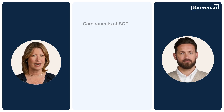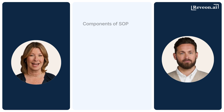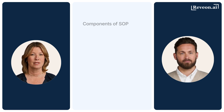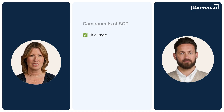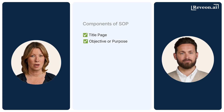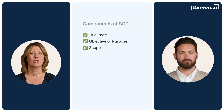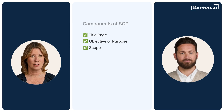Here are the essential components every SOP should include: a title page with SOP number, title, version, effective date and authorising signatures; an objective or purpose explaining why the SOP exists; and scope, covering what activities or roles it covers.